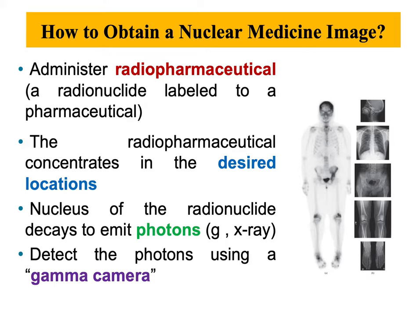All the imaging modalities — planar imaging, SPECT, and PET — can be categorized into two groups. The first group is planar imaging and SPECT imaging, which uses radio tracers that are gamma emitters, while PET, the positron emission tomography, uses radio tracers that emit positrons.